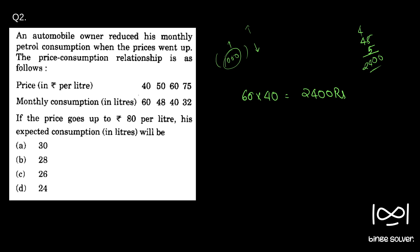In that case, when the petrol price goes to 80, we have 80 into X equal to 2,400. So X is equal to 2,400 divided by 80, which is 30. So 30 litres is the answer.